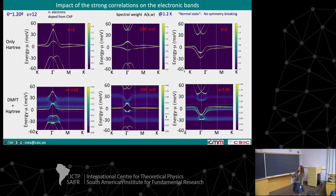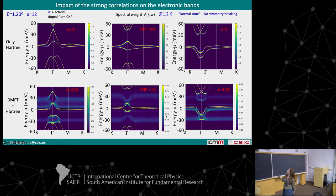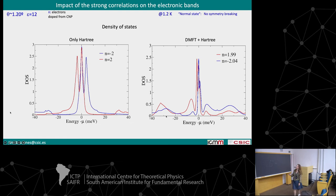This is a not-very-narrow-bandwidth system. If we look at the density of states comparing Hartree and DMFT plus Hartree, there has been a clear change, but we can still recognize the Hartree density of states. At different fillings, we see more or less the same thing. Doping with electrons and then the undoped system, as expected in other Mott systems, the incoherent spectral weight has been transferred to negative energies.